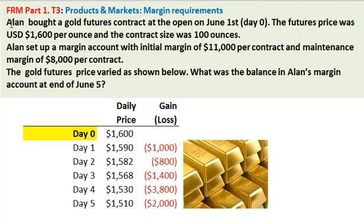Hello, this is David Bonnock-Turtle continuing our series of working actual practice questions for the Financial Risk Manager exam. This is Part 1, Topic 3, Products and Markets, and specifically Margin Requirements. This question I did borrow from GARP's actual practice questions, although I switched the example from a generic commodity to a gold futures contract and used roughly more realistic numbers. I thought it'd be more fun to use a realistic example.